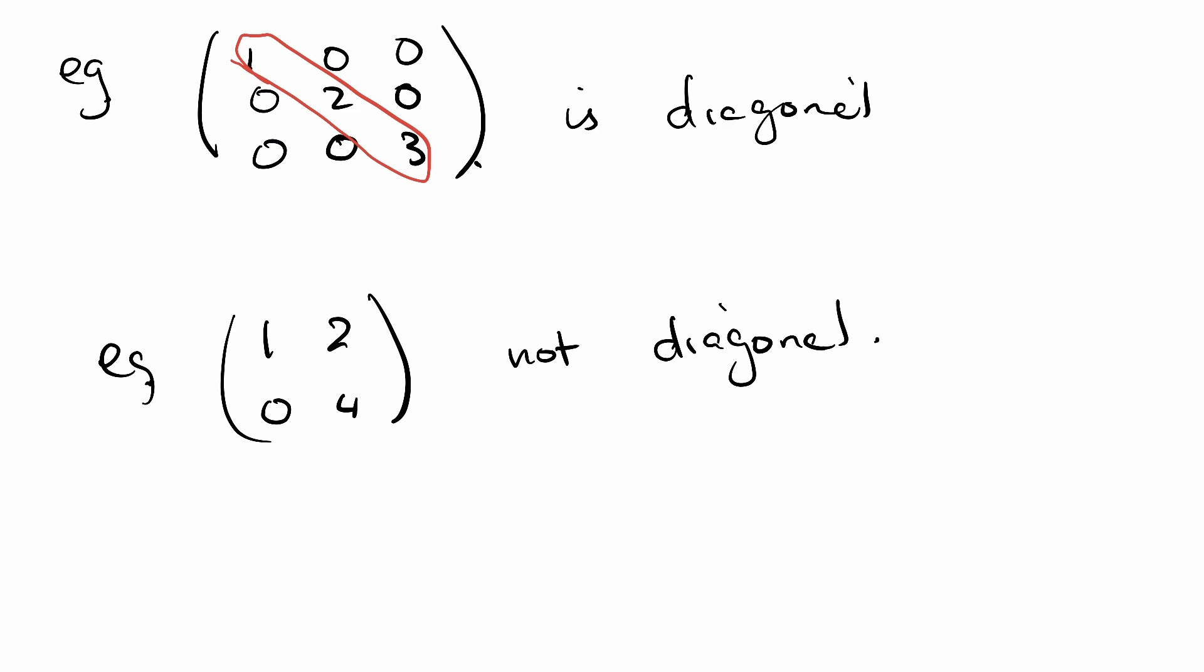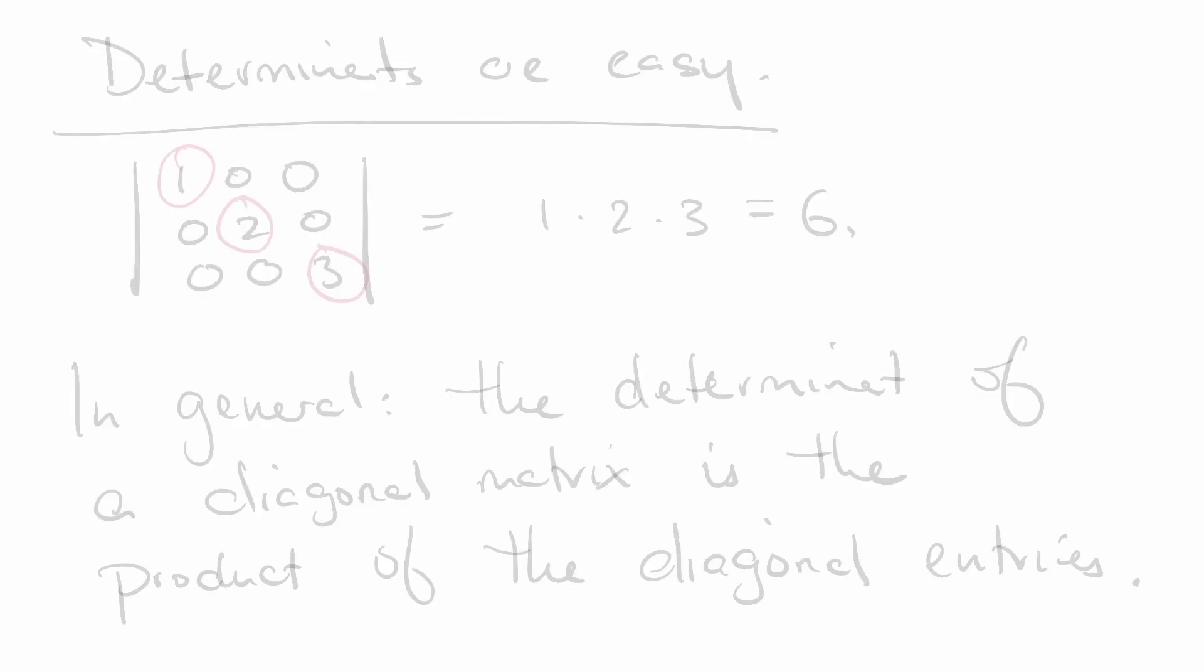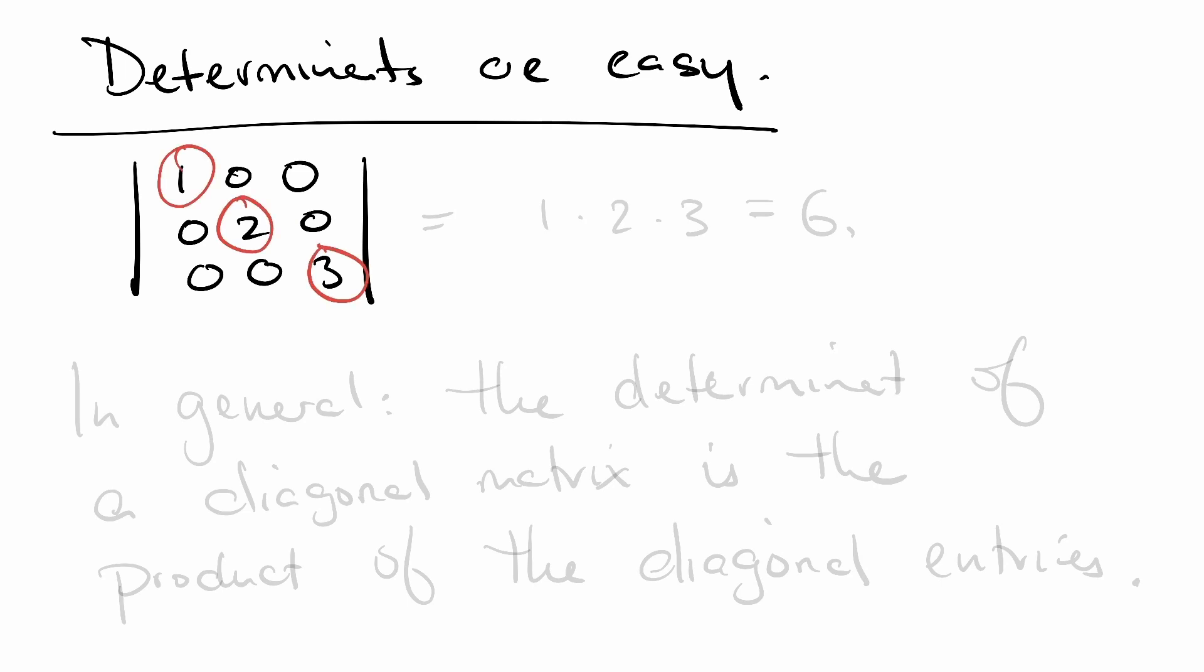Why do we like diagonal matrices? Well, they come with a number of advantages. For diagonal matrices, determinants are easy. So for example, if I wanted to take the determinant of our matrix, because it's triangular, the determinant is going to be the product of the diagonal entries. In this case, we get 1 by 2 by 3, which is 6.